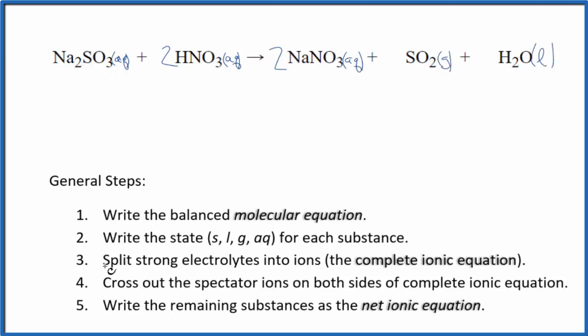Now we can split the strong electrolytes into their ions. That'll give us the complete ionic equation. Sodium on the periodic table's in group one, that has a one plus. The whole sulfite ion is two minus, so we have two sodium ions. I won't write the states each time, let's do that at the end.